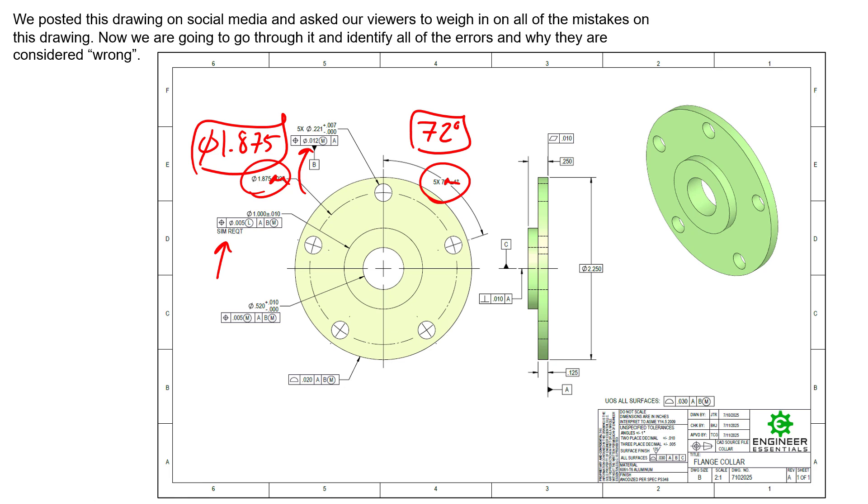Next we see the simultaneous requirement here. Simultaneous requirement is something we cover in our advanced course, and it's applied by default to any control that has the same datums in the same order with the same modifiers. We see here these are the same datums in the same order with the same modifiers. That means we have by default a simultaneous requirement on these features, and we don't need to explicitly say that. So this note becomes redundant and useless.